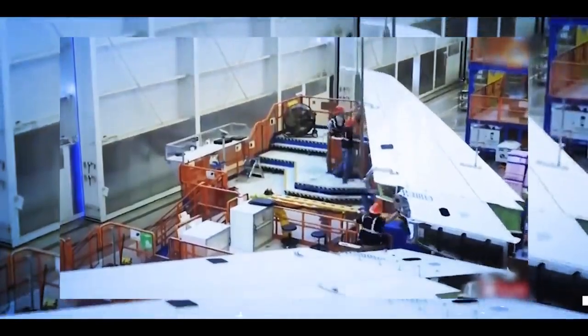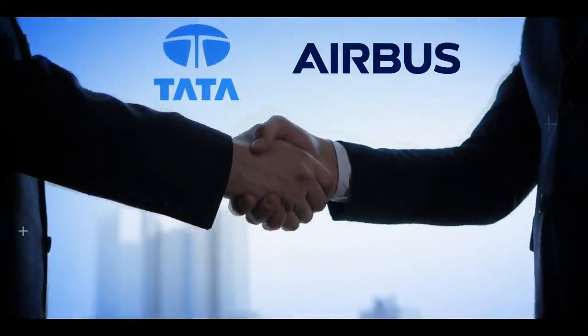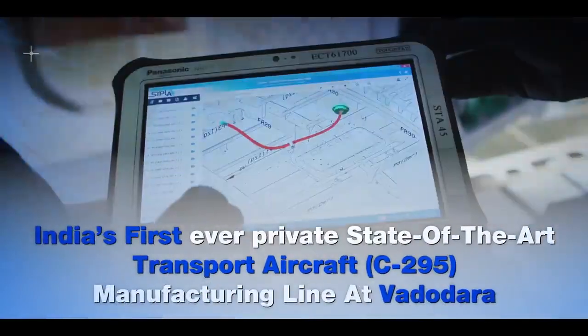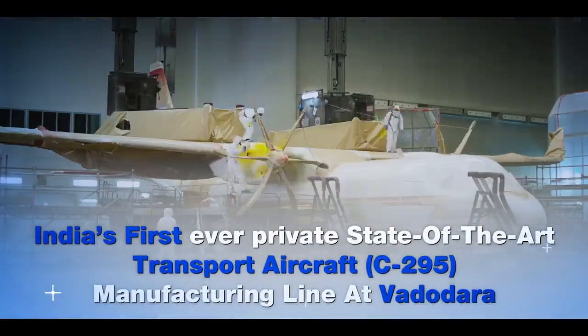Global suppliers and decision makers. Tata Consortium and Airbus have partnered for India's first-ever private state-of-the-art transport aircraft C-295 manufacturing line at Vadodara.